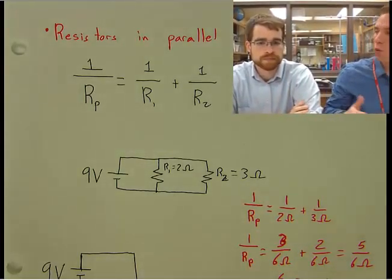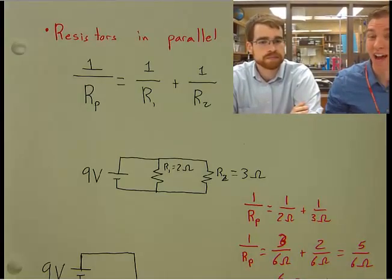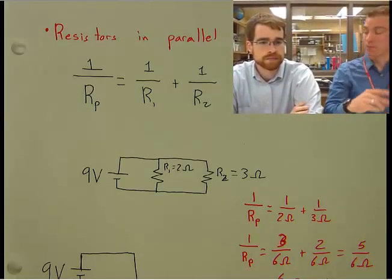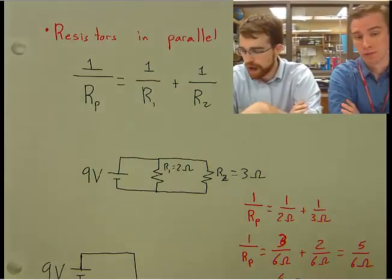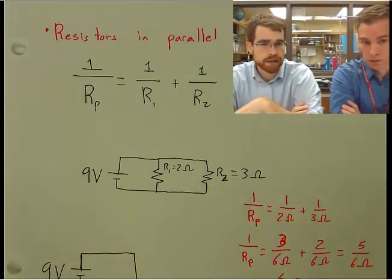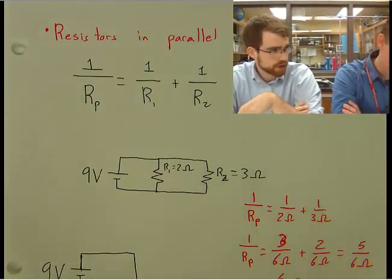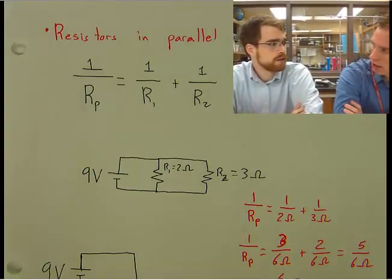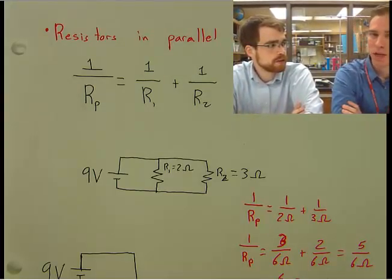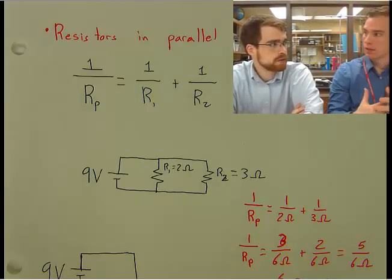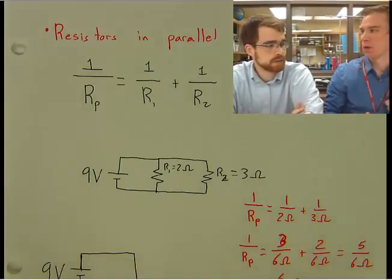Which is just the fancy way of saying you got to take 1 over R1 plus 1 over R2 and then remember to flip that thing on itself. So if we're adding two different numbers together, does that mean that we're going to have to find common denominators for all of these? I could push this through a calculator, but I like to do the common denominator because it's actually easier to flip for me.